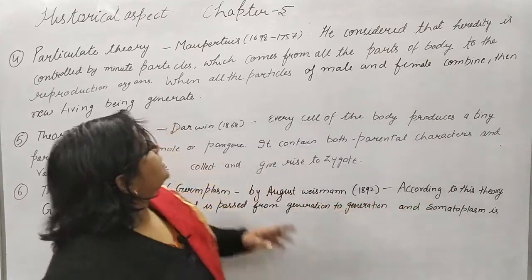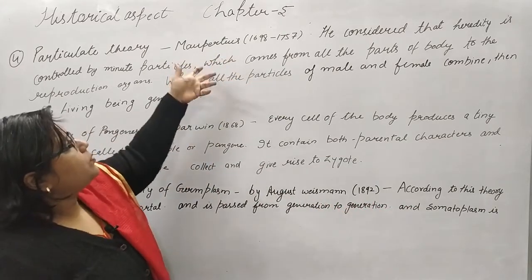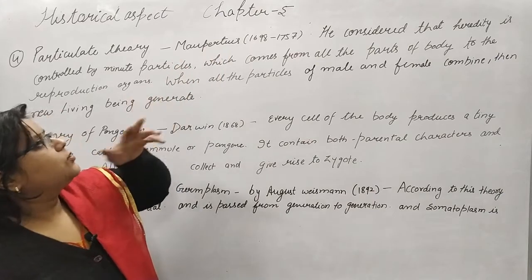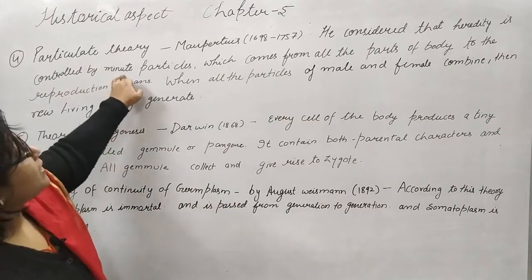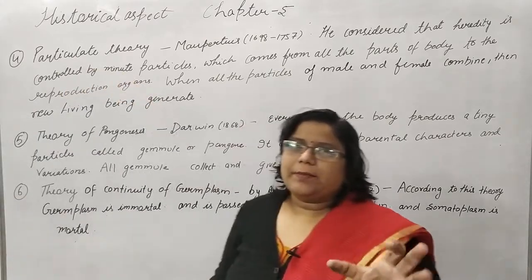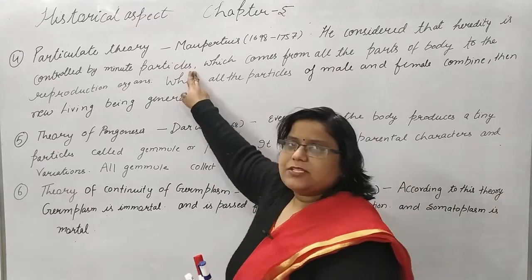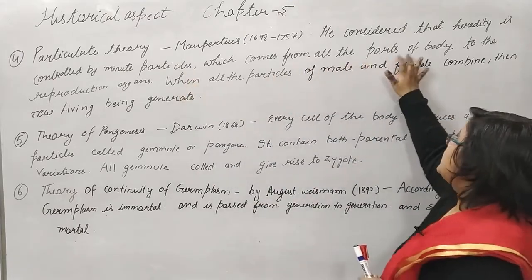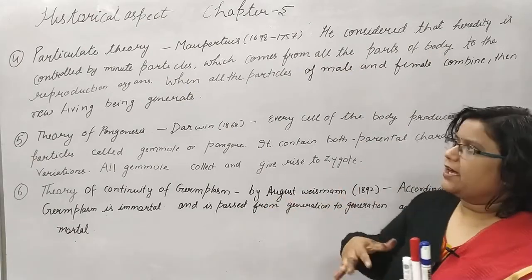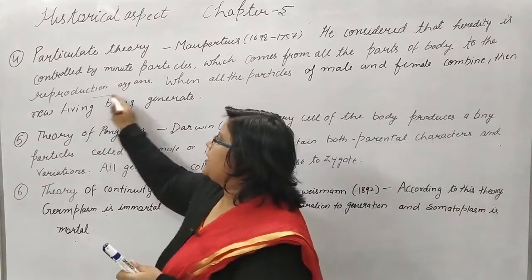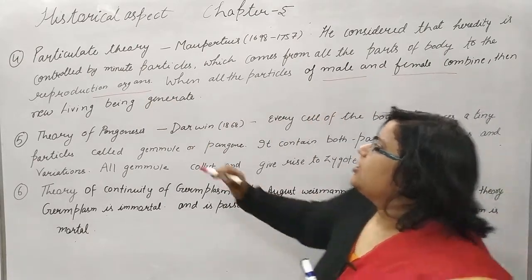The Particulate Theory was given by Maupertuis. This theory considered that heredity is controlled by minor particles. These particles, which carry characters from generation to generation, come from all parts of the body, are regulated, and finally accumulate in the reproductive organs, where when combined they generate a new living system.